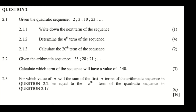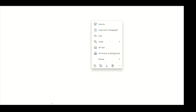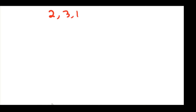We're going to do question 2. For 2.1.1, we are given a quadratic sequence of 2, 3, 10, and 23. We are asked to write down the next term of the sequence.